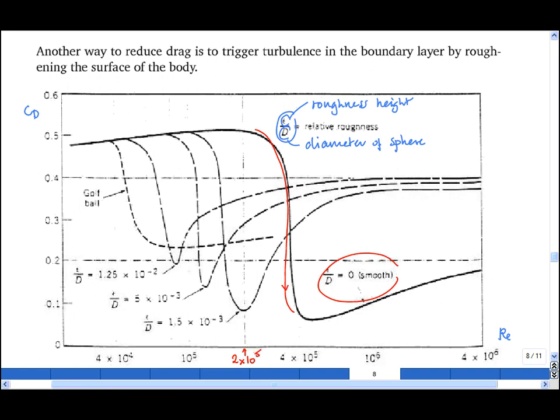Now as we increase the roughness of the sphere, we see that this drop happens at lower Reynolds numbers. And as we increase it further, lower Reynolds until we get right down to a golf ball, a dimpled golf ball, where this happens at a much lower Reynolds number.